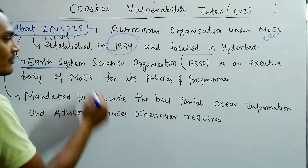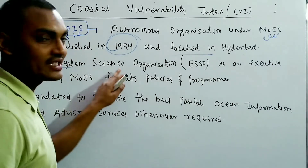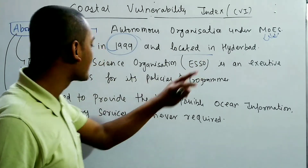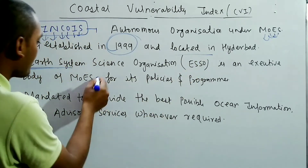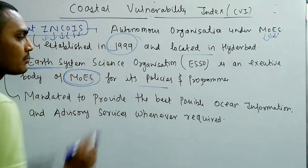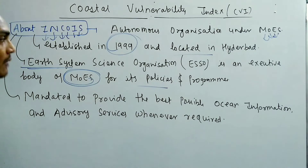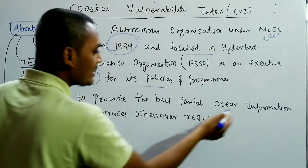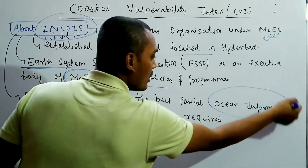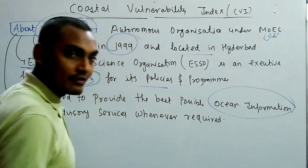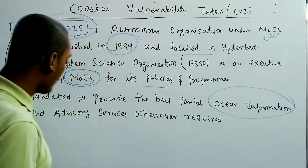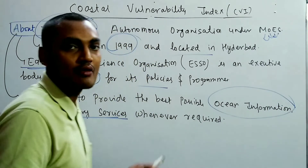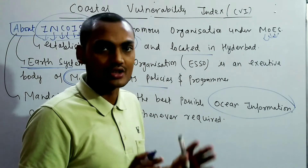The Earth System Science Organization (ESSO) is an executive arm of the Ministry of Earth Sciences for its policy and programs. INCOIS's main mandate is to provide the best possible ocean information services and advisory services whenever required by the government or any industry.